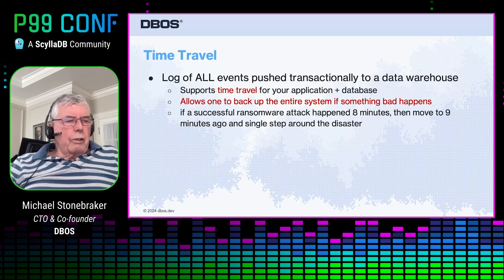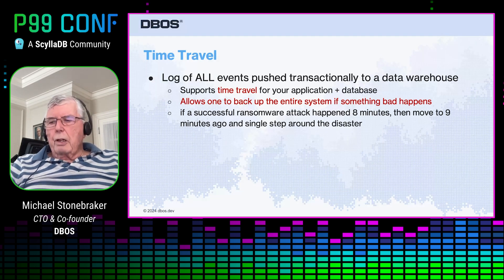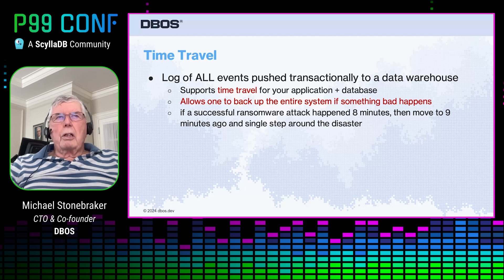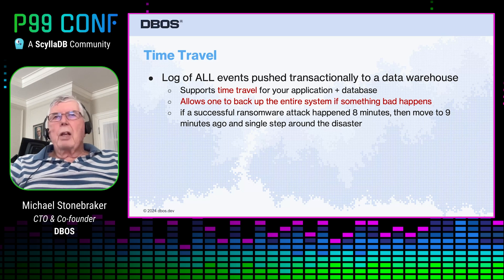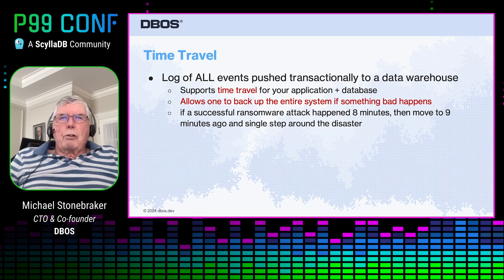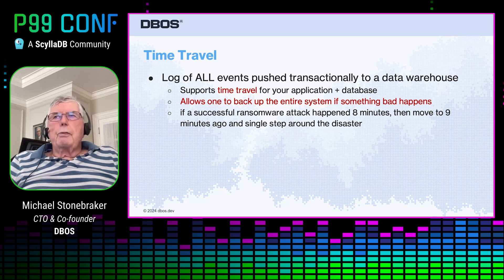One of the nice things that we do for you is we give you time travel for everything. I already said that we could give you time travel for your application, and that's a useful thing to do for debugging purposes. But in fact, our operating environment is database-based, so we do time travel on everything in the data in our database. So that means if you want to back up the entire system five minutes, go ahead — we simply go back through the log of all events and restart from five minutes ago. So if there's a successful ransomware attack that happened eight minutes ago, simply move to nine minutes ago and single step around the disaster, and you're now up and running.